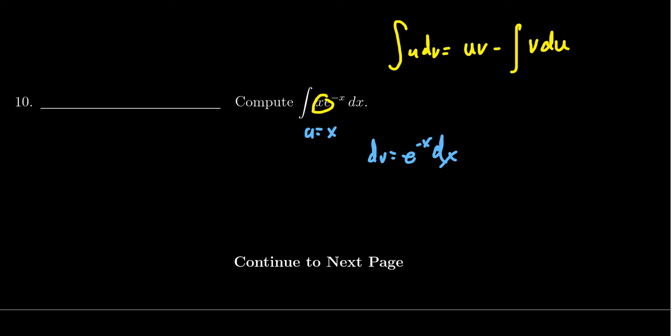But there is an advantage by taking the derivative of x. It's just going to vanish, right? The derivative of u will just be dx there. It just disappears. And then, like I said, the antiderivative of e^(-x) is negative e^(-x).